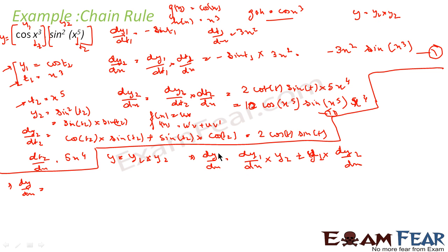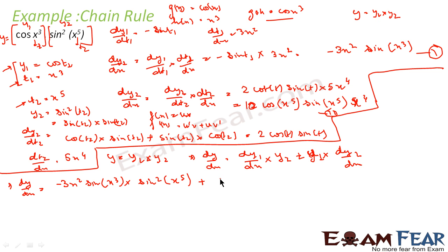So dy/dx = dy1/dx · y2 + y1 · dy2/dx. The value of dy1/dx is -3x²·sin(x³), multiplied by y2 which is sin²(x⁵), plus y1 which is cos(x³), multiplied by dy2/dx which is 10x⁴·cos(x⁵)·sin(x⁵).